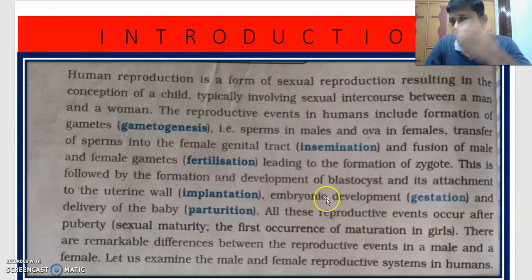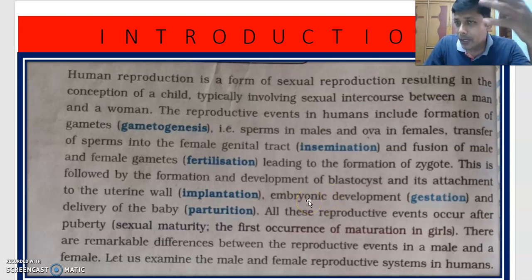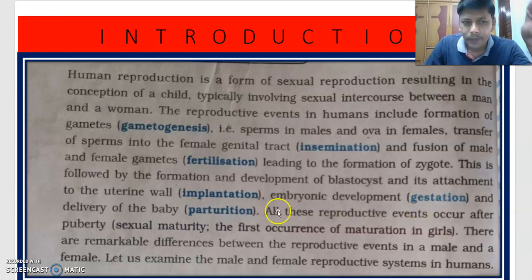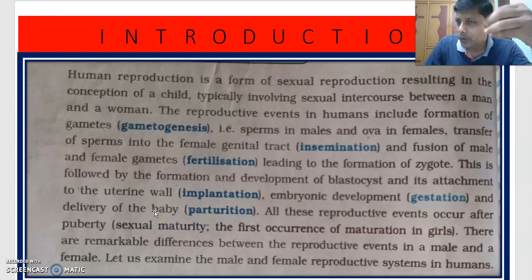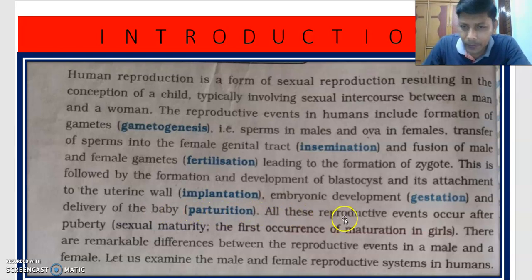Once the embryo gets implanted to the wall of the uterus, the entire embryonic development takes place there. Embryonic development is called the gestation or pregnancy period, and the delivery of the baby after the full development of the embryo is called parturition.